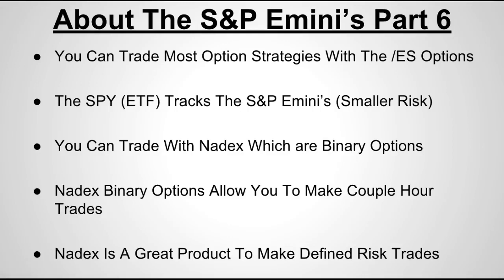Part 6 about the S&P E-Minis. You could trade most option strategies with the E-Mini S&P futures — we touched on this in the last video. So you could buy calls, buy puts, do vertical spreads, butterflies, iron condors — everything you could do with stocks you can pretty much do with the E-Mini S&P futures. If you ever get assigned, instead of being assigned on stock, you'll just be assigned via a futures options contract.